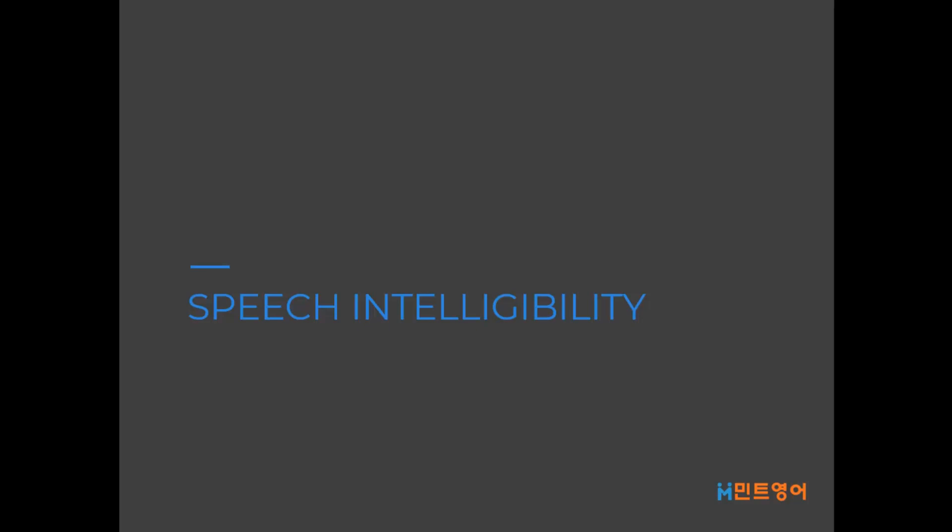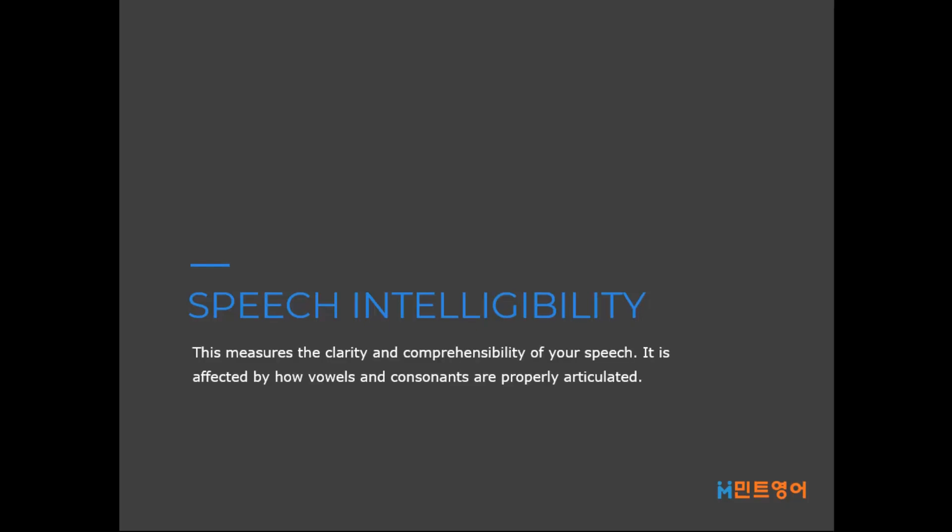Speech intelligibility measures the clarity and comprehensibility of your speech, and it is affected by how vowels and consonants are properly articulated. Mispronouncing words may also change the meaning of sentences and affect your grammar score.